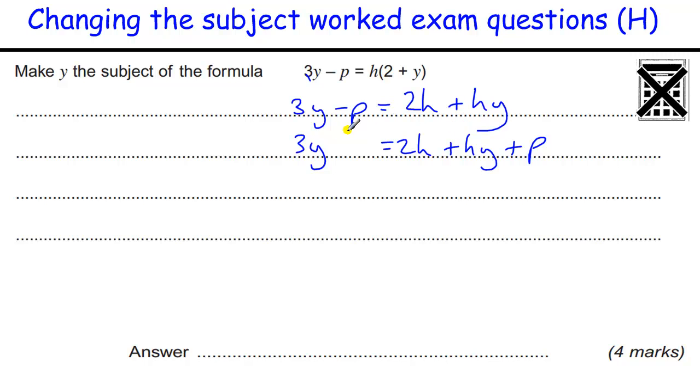Then I'm going to move this over to the other side by taking it away, and now I've got all the Y's on one side, there are with other things, but they are on one side. So I've got 3Y minus HY, so if I take the Y out of that by factorising in a bracket, I'm left with, well, 3 times Y is 3Y, and H times Y is HY.